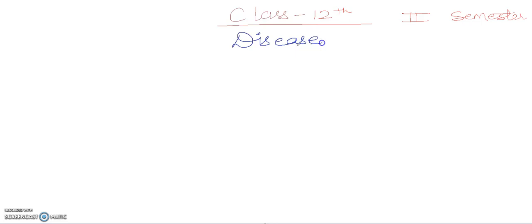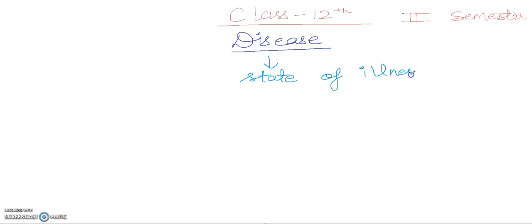What exactly is disease and how are we going to classify it? Disease is a state of illness — for health I told you it is a state of wellness, and disease is a state of illness. So when the functioning of one or more organs is adversely affected, we consider it a diseased condition.